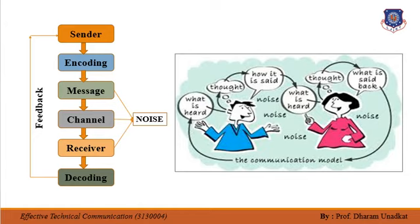For example, a classroom is required for the lecture to happen in an educational institute where certain rules are followed. Also, there is noise which acts as interference in the communication. Thus, the communication process involves various elements like sender, encoding, message, channel, receiver, and decoding.